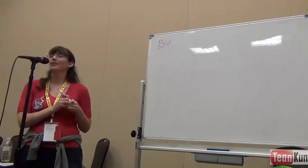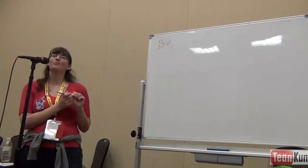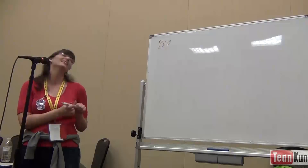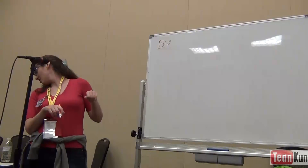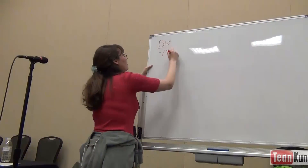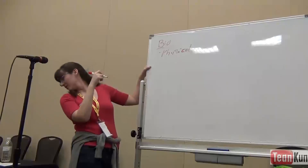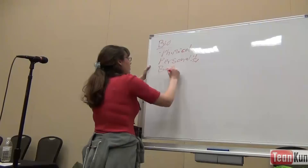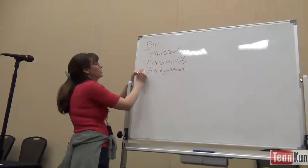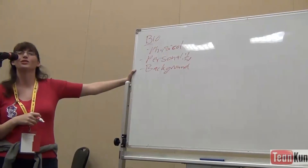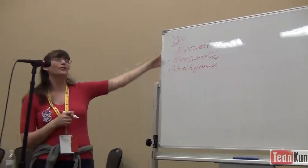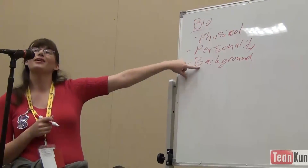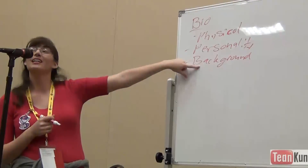We're going to talk about what goes into the bio because when you make a character, you have to be consistent. You can't make them blonde one chapter and brunette the next, or happy in one chapter and sad in another for no reason. So: physical appearance, personality, and background. These are self-explanatory — pick something and stick to it. If she had a happy childhood, she doesn't suddenly have a sad childhood.